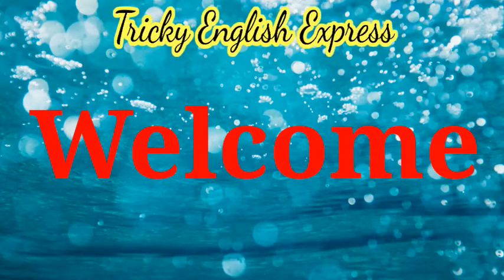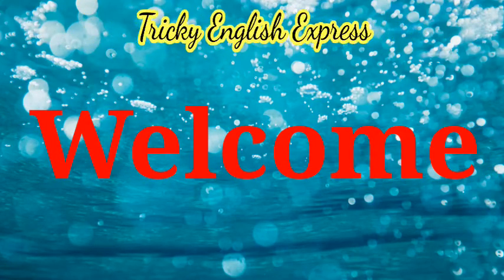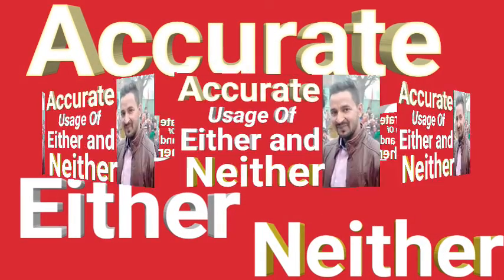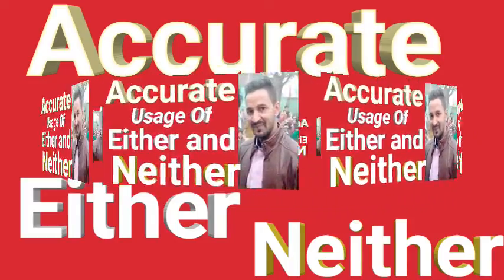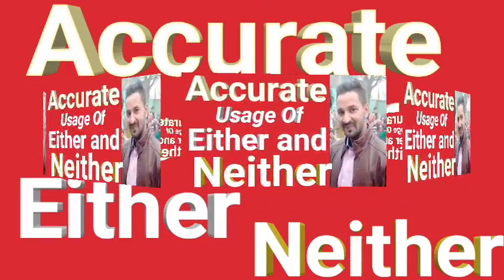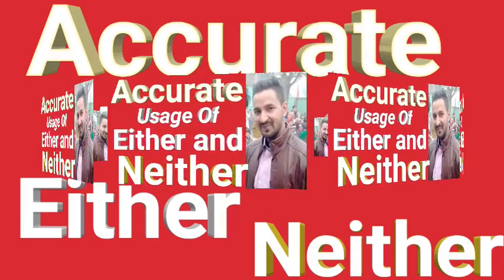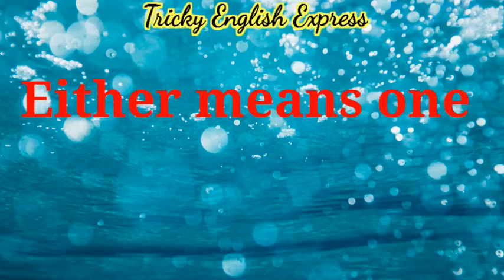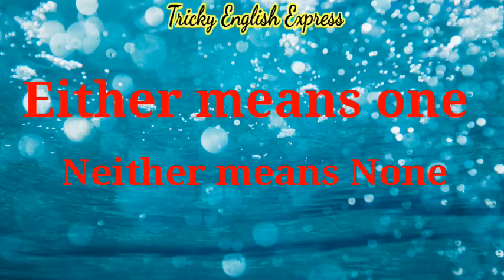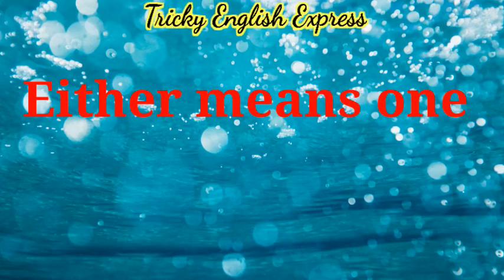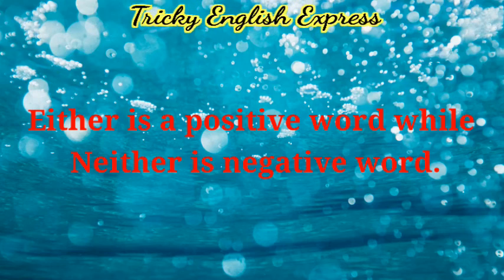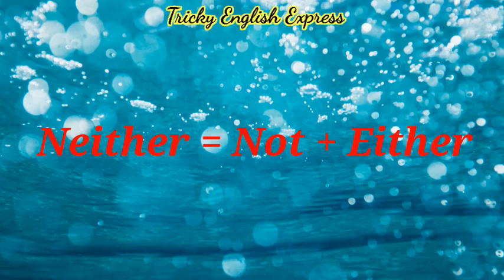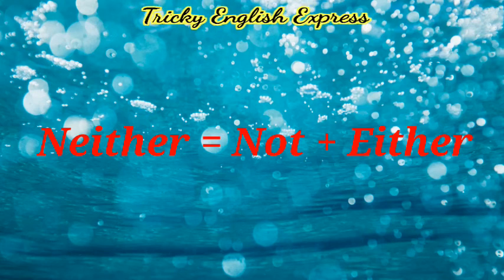Hello guys, I am Rabi from the YouTube channel Tricky English Express. Today we will learn how to use 'either' and 'neither'. Either means one of two, and neither means none of two. Either is a positive word while neither is a negative word — neither is equal to 'not plus either'.